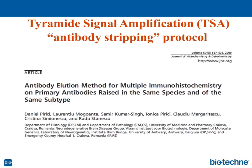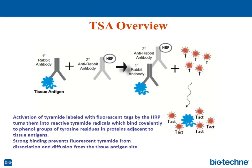Before going into the protocol itself, I would like to remind you what tyramide signal amplification allows us to accomplish. We incubate tissue sections or cells with primary antibodies, followed by anti-primary antibodies conjugated to the enzyme horseradish peroxidase (HRP). This creates a sandwich complex, and then we add tyramide labeled with fluorescent dyes.